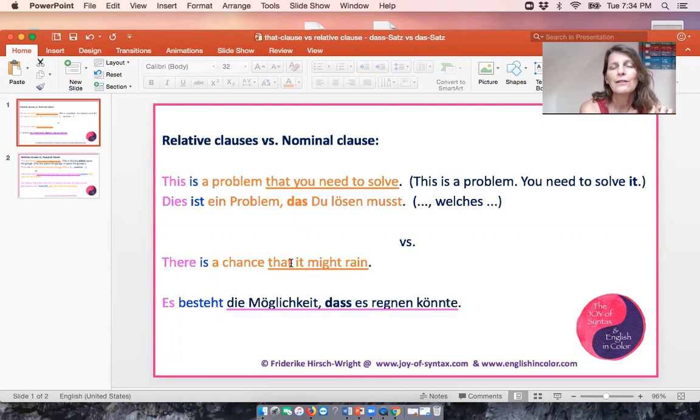How can we distinguish between the relative pronoun and the conjunction that? Well, for one thing we couldn't substitute which. In this case we couldn't say there is a chance which it might rain. Nobody would do that. Also you see that 'it might rain' is a complete clause in a way. That is not a clause element in that clause. It simply is a conjunction that's placed in front of the clause in order to indicate that it is a subclause.